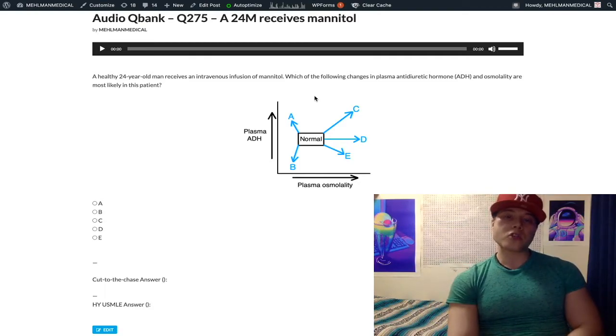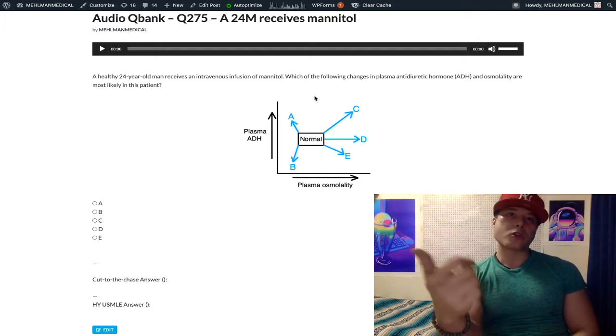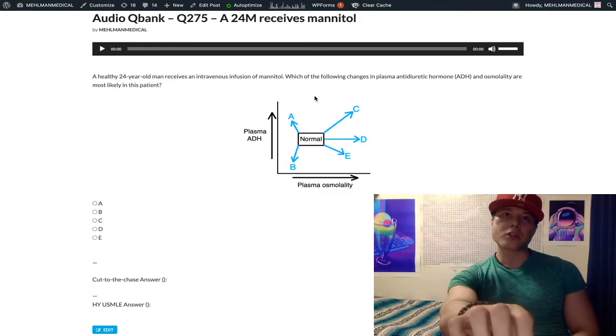So mannitol, what is it? It's a sugar alcohol. It's going to increase plasma oncotic pressure, increase solute pressure within the blood, and increase plasma osmolality. Think of glucose or albumin - they're solutes that increase oncotic pressure within the blood and function to increase osmolality.